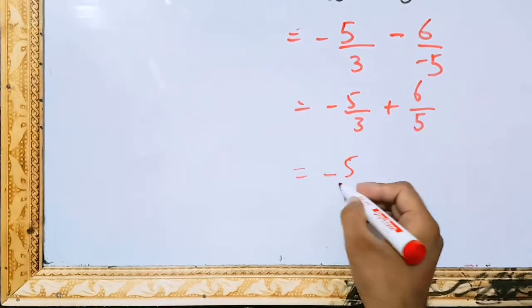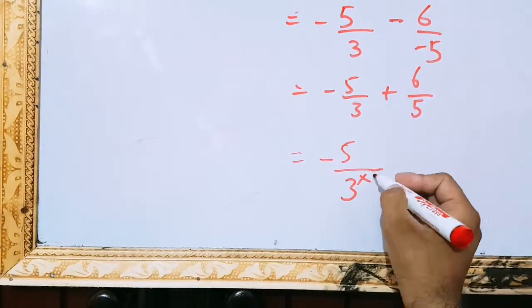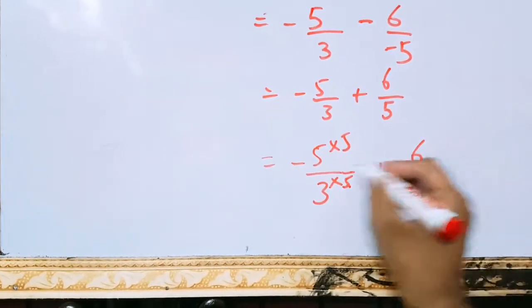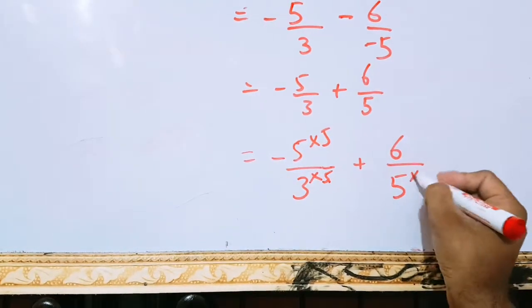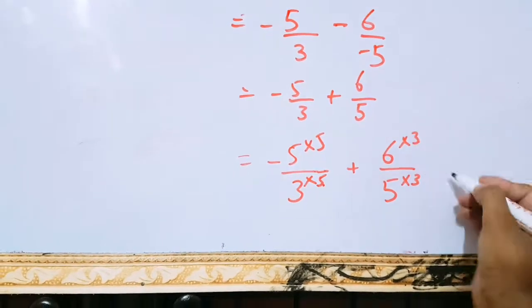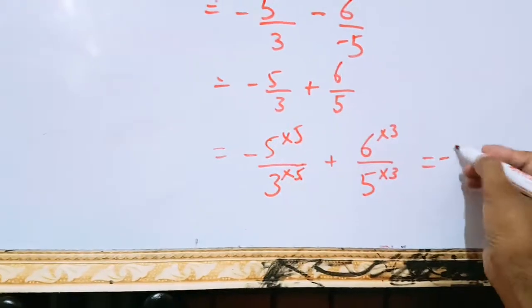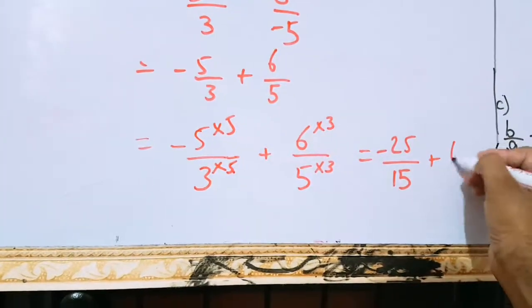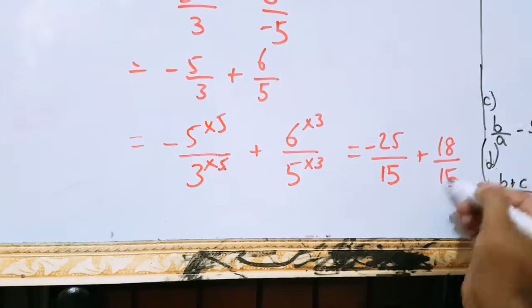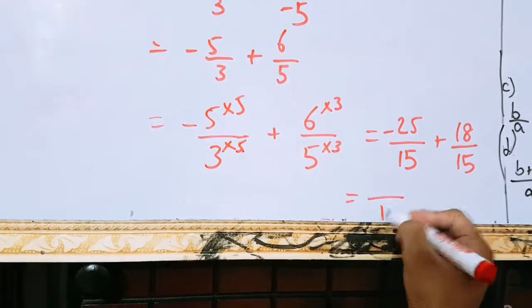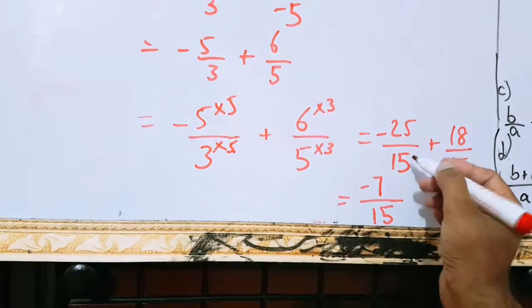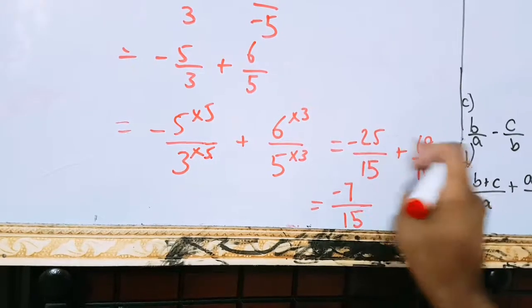Minus 5. And here minus, here 3 will be multiplied by 5. And if it is multiplied by 5, this will also be multiplied by 5. And if they are being multiplied by 5, here 5 will be multiplied by 3. Its numerator will also be multiplied by 3. 5, 5 times 25. And 3, 5 times 15. Here 6, 3 times 18. And 5, 3 times 15. 15 on the bottom of both. So, 15 will be written only once. 25 minus 18 will be 7. Minus 7 is the answer. Sign of the bigger value will be used. 25 is bigger than 18. So, it's sign will be used. So, 7 over 15 is the answer.